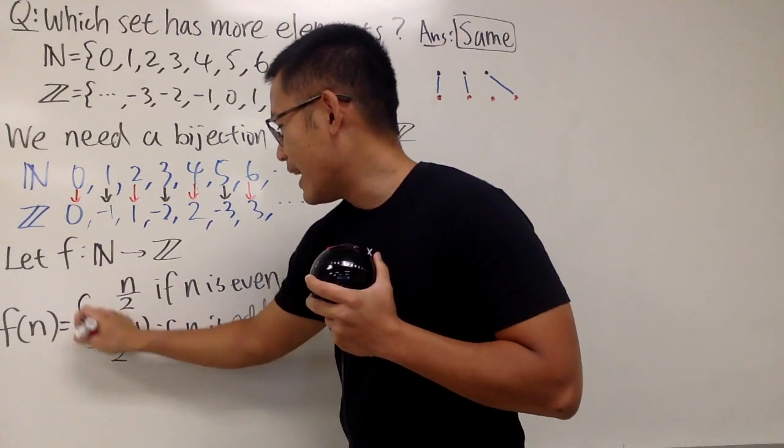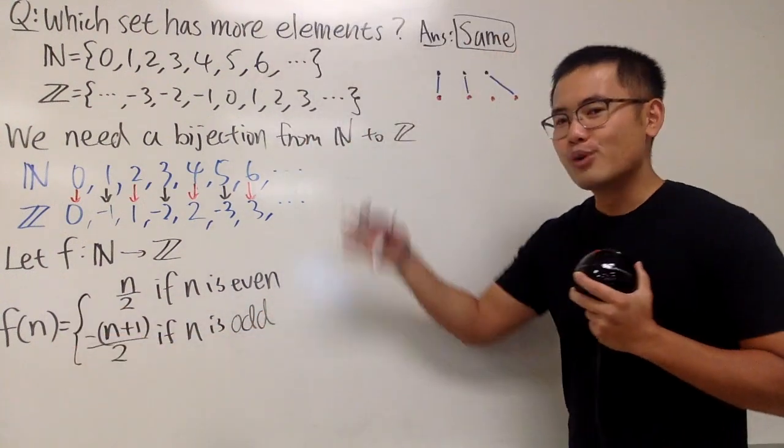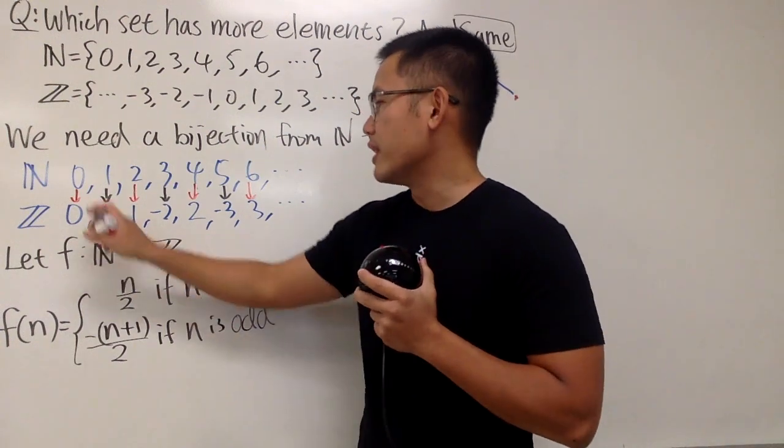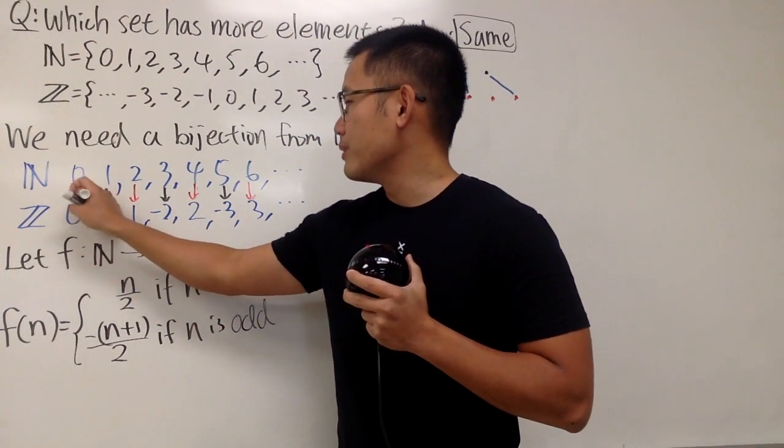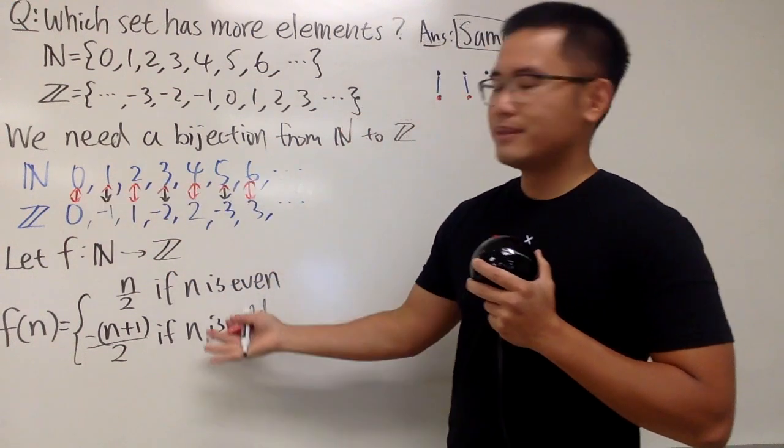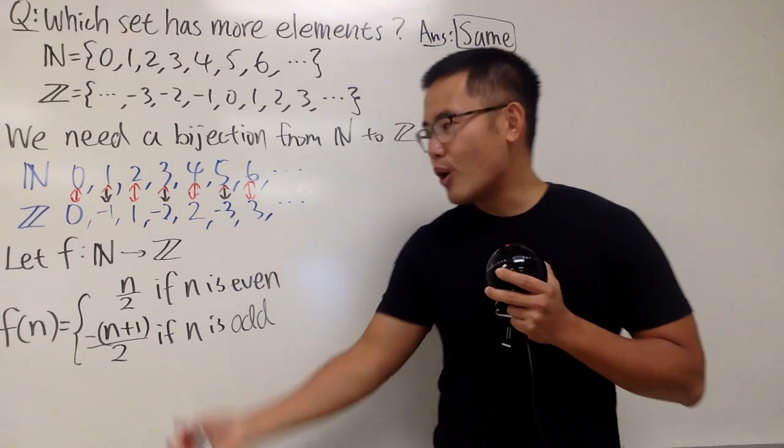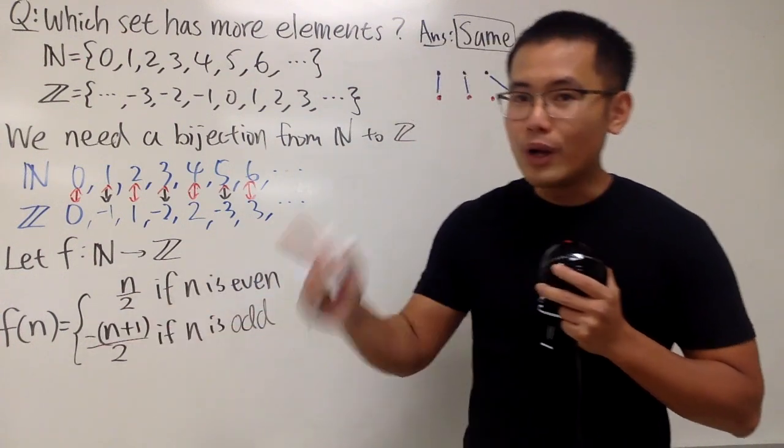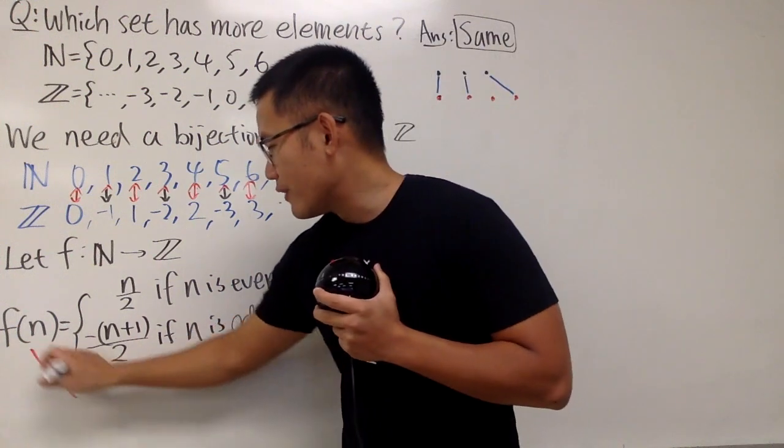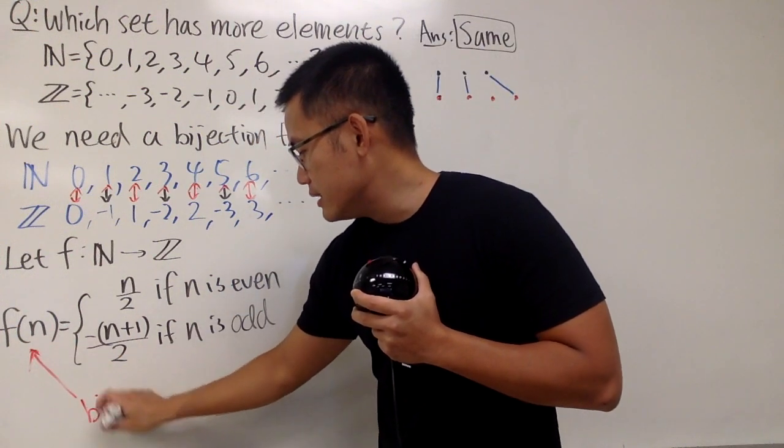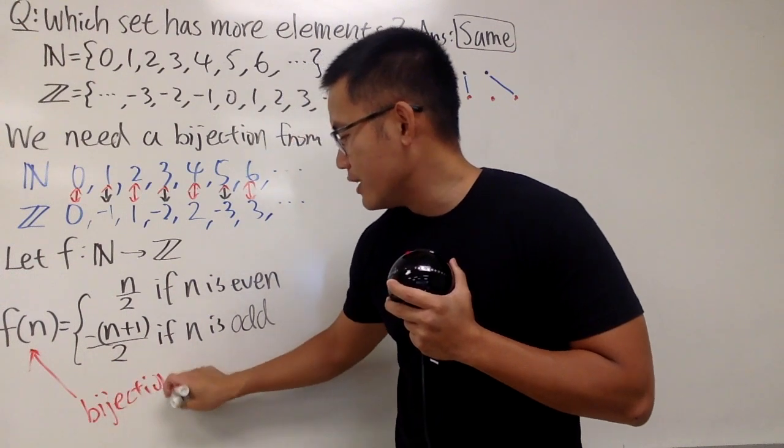And in fact, this right here is a bijection. Meaning that you can just draw the arrow there both ways. Meaning that it has an inverse. Meaning that you can show mathematically by using definitions that this function is 1 to 1 and onto. And I will do that for you guys in the next video. I'll just put this down right here. This is in fact a bijection.